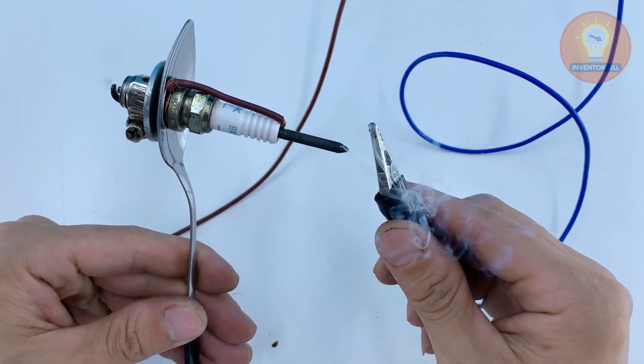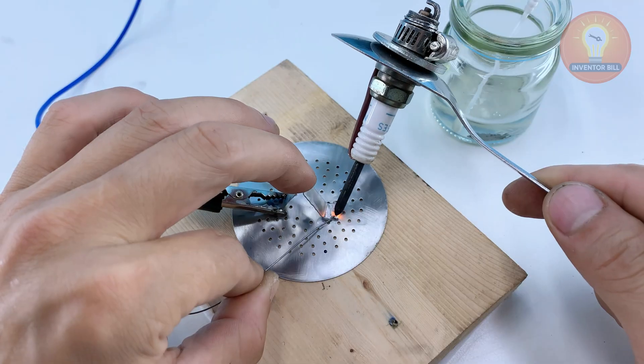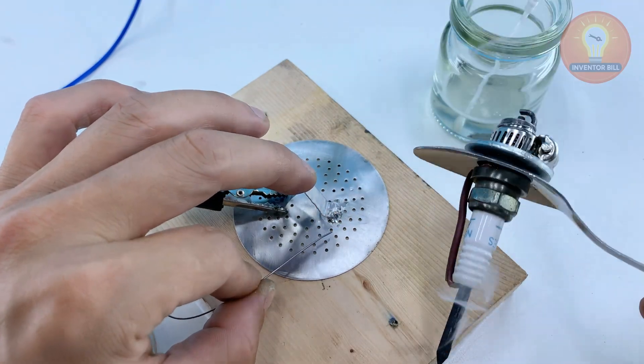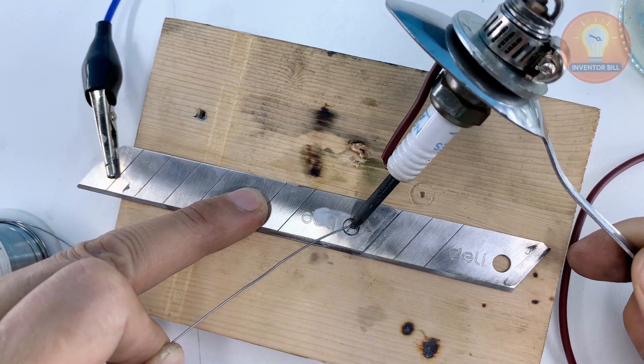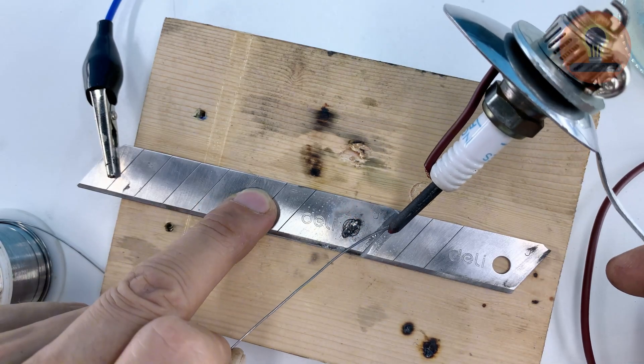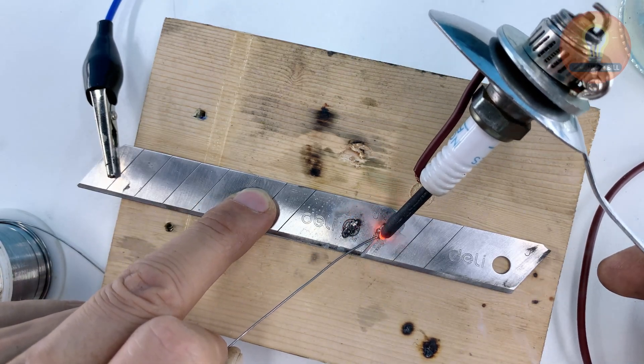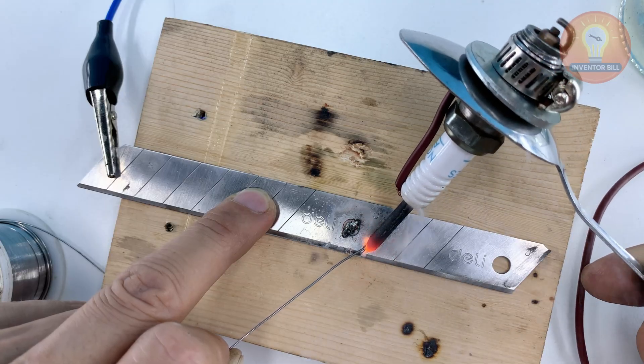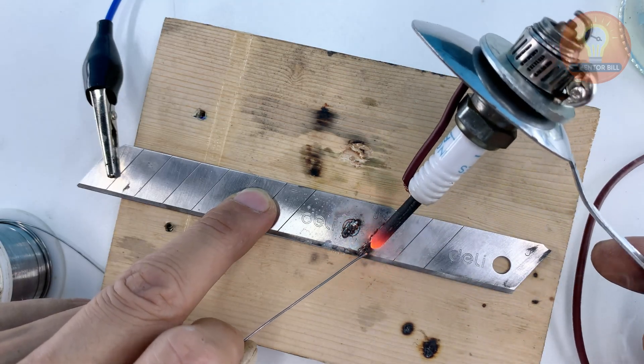If one everyday kitchen spoon could melt metal and fix broken tools, wouldn't you want to see how it's done? When you've been fixing things around the house for years, it's amazing how a simple idea can still surprise you. It's quick, practical, and you can do it with things you already have at home.